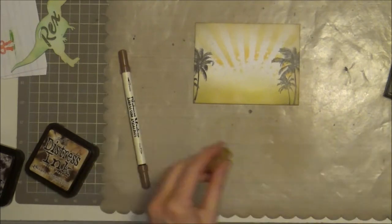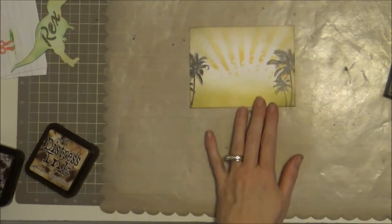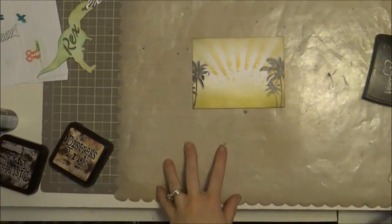You just take the brush marker, in this case I'm using both vintage photo and brushed corduroy, and that air forces past the marker and just creates kind of a splatter effect. And I'll show you this—it's a little hard to see on the video, but I will pick it up and so you can see just how those splatters look.